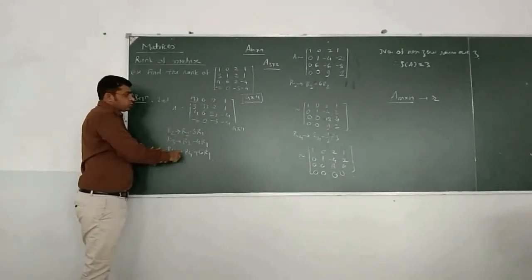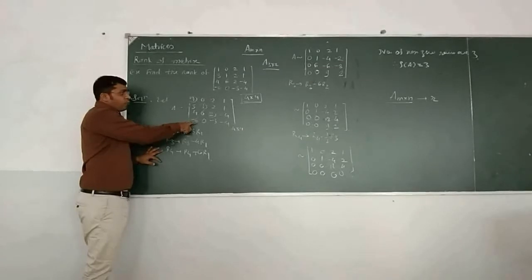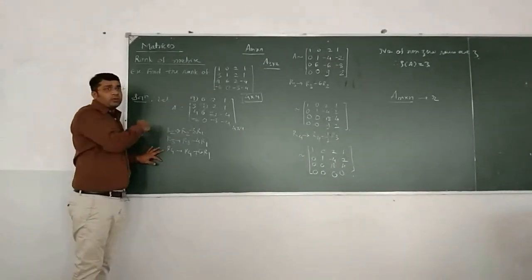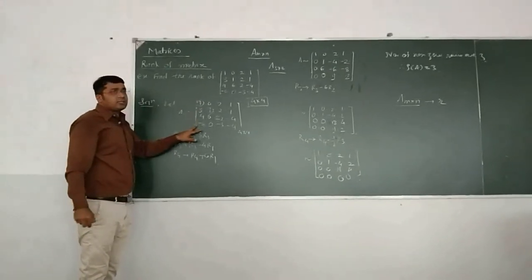Then R4 changes to, minus 6 is here, R4 plus 6 times R1. So these 3 entries are 0 then.